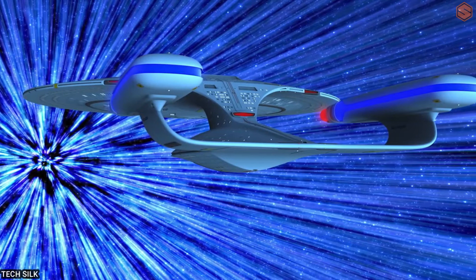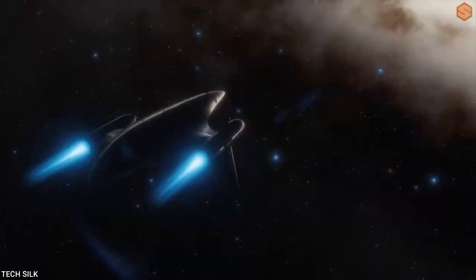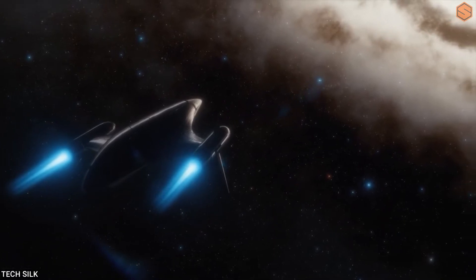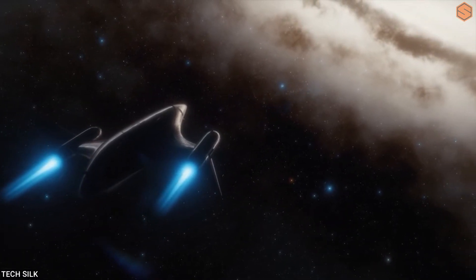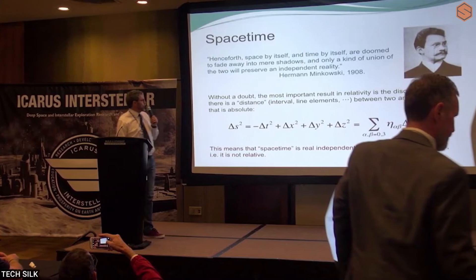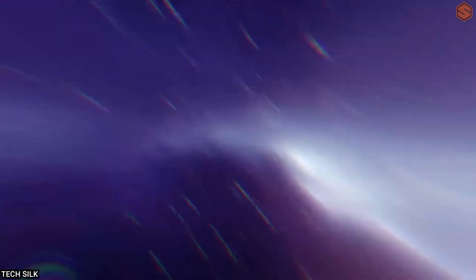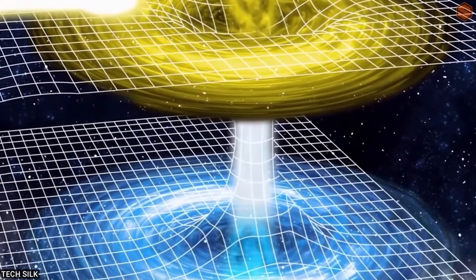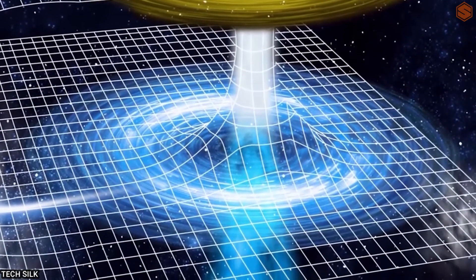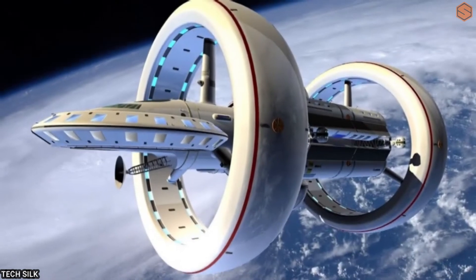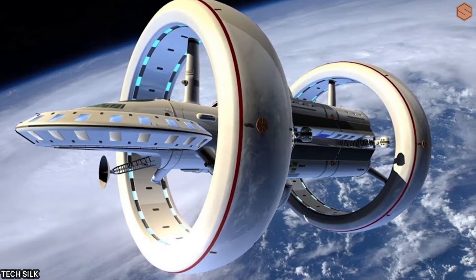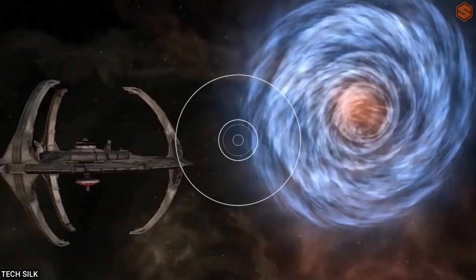What is dark energy? In order to understand how this new technology works, we need to first understand what dark energy is. Dark energy is a mysterious force that makes up around 68% of the universe. It's what's responsible for the accelerated expansion of the universe. And while we don't know much about it, scientists believe that it has the power to warp space and time. So how does this relate to travel? Well, by harnessing the power of dark energy, it may be possible to create a warp field that would allow an object to move faster than the speed of light. In other words, you could instantaneously travel to any point in the universe.